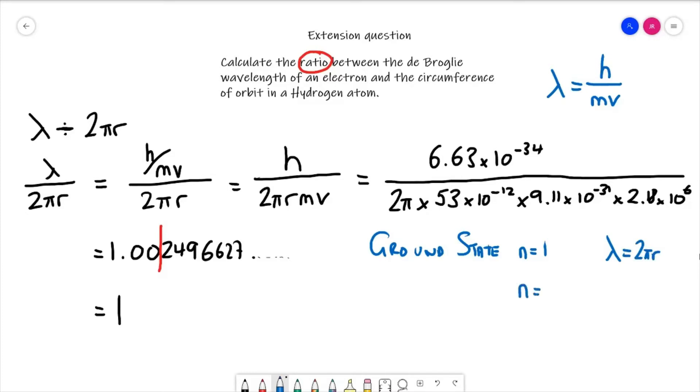When we go to the next excited state, n equals 2, our circumference now becomes twice the wavelength. Our next excited state, 2πr is going to be 3 times the wavelength, etc. So whatever happens in our atom, our electrons that are orbiting must be some integer multiple of the de Broglie wavelength as it's orbiting in that atom.